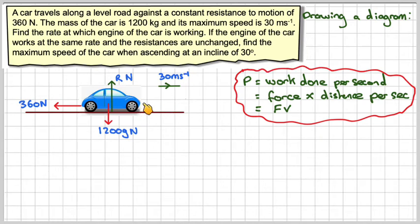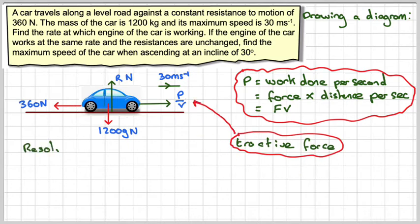So the force here making the car go along given by the engine will be P divided by V. It's just a rearrangement of this. This is often known as tractive force.